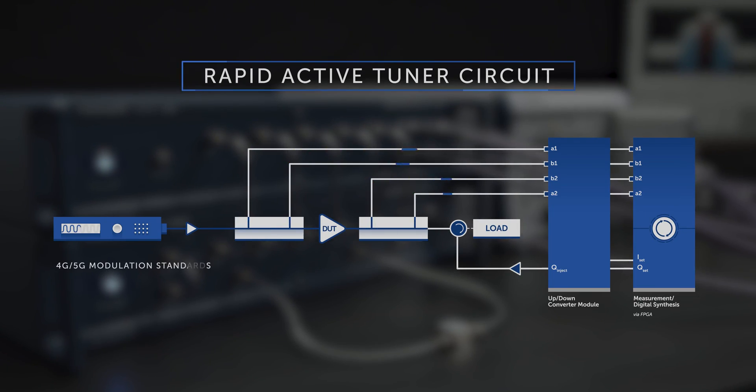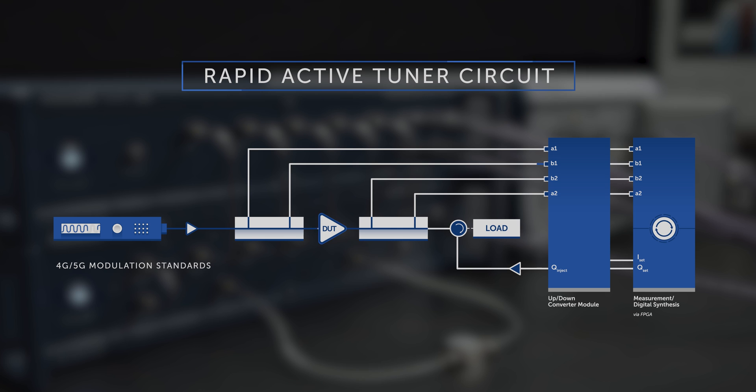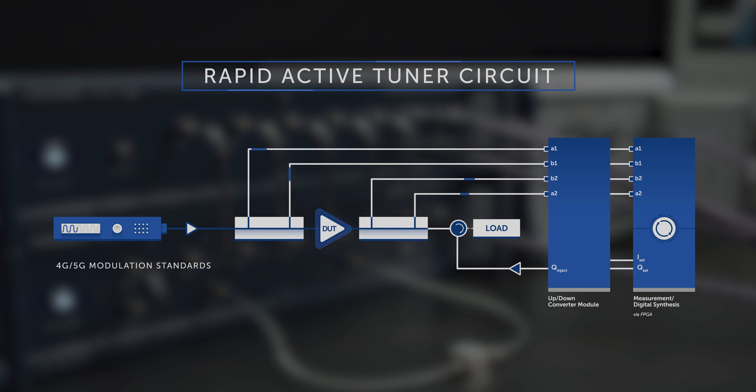Other spectrum analysis features include ACPR, EVM and CCDF for advanced modulation standards such as 4G and 5G, as well as the ability to de-skew non-ideal tuner impedances over bandwidth.